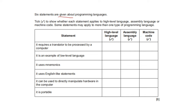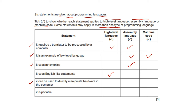Six statements about programming languages; tick whether each applies to high level language, assembly language, or machine code. It requires a translator — high level language and assembly language. It is an example of low level language — assembly language and machine code. It uses mnemonics — assembly language. It uses English-like statements — high level language. It can directly manipulate hardware — assembly language and machine code. It is portable — high level language.